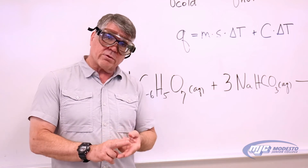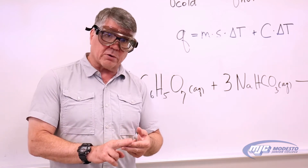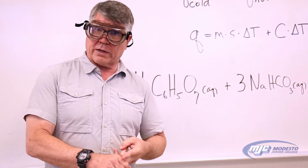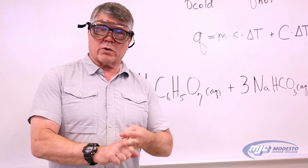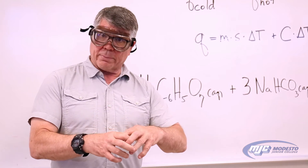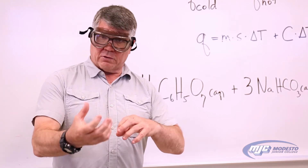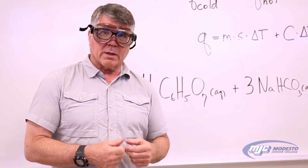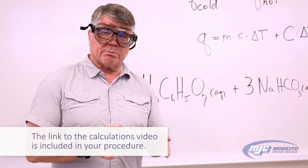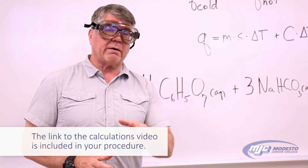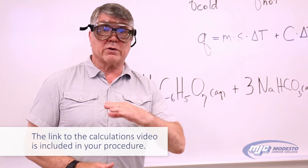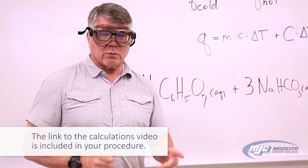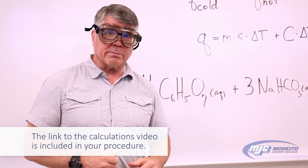This third part of the experiment has three sub-parts: the heat of solution of sodium bicarbonate, the heat of solution of citric acid monohydrate, and then reacting the two compounds together to measure the change in enthalpy. There's a separate video explaining the calculations, and I'll put a link to that in the video. So let's go over there and start doing the experiment.